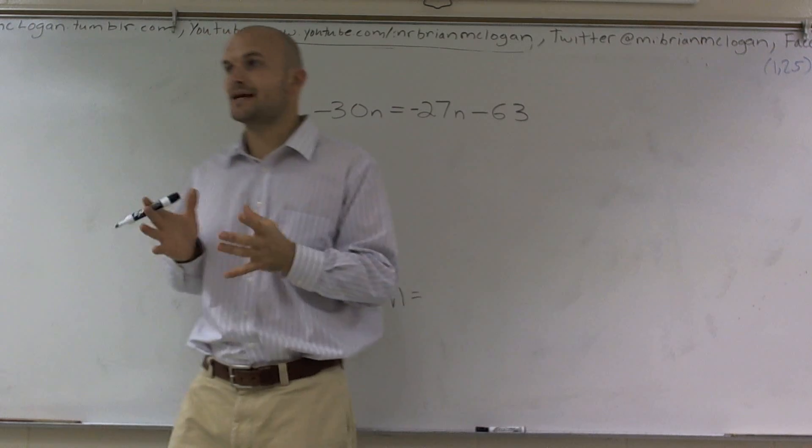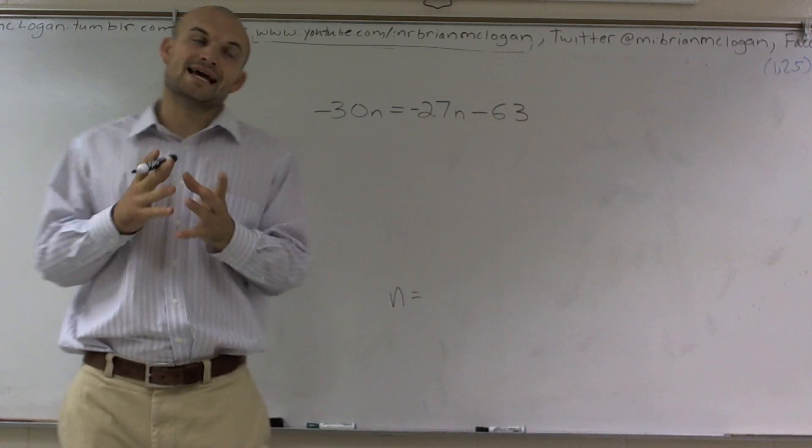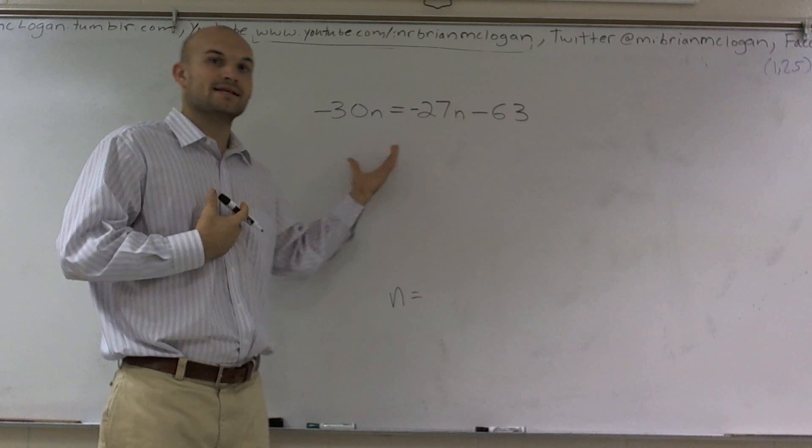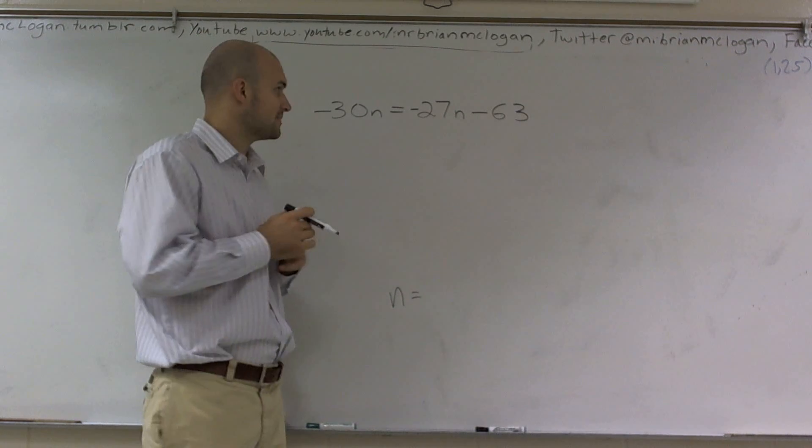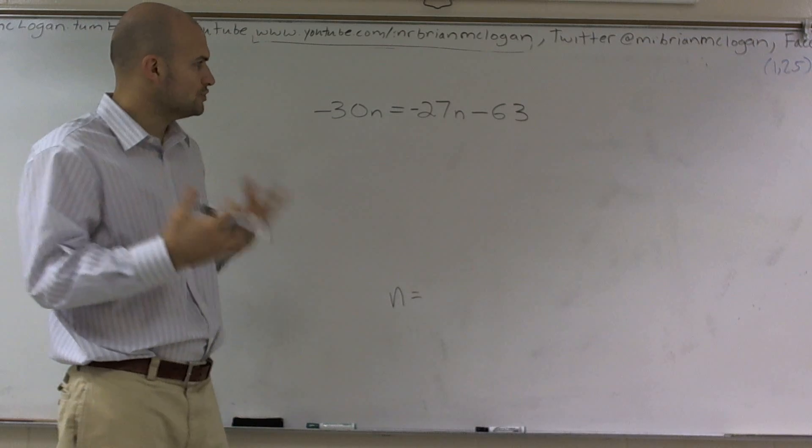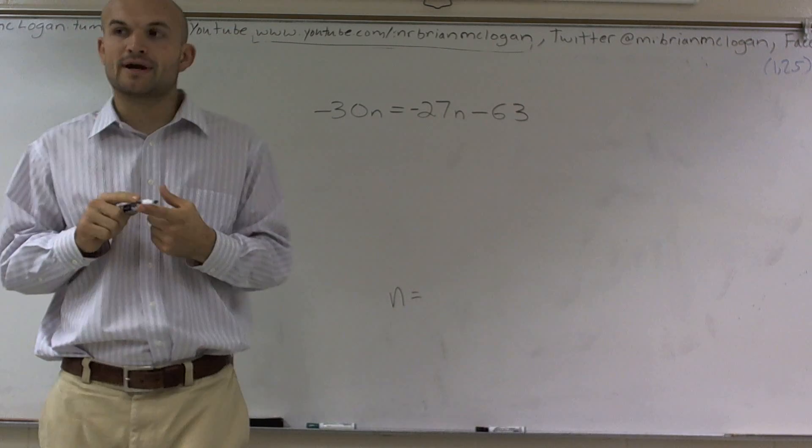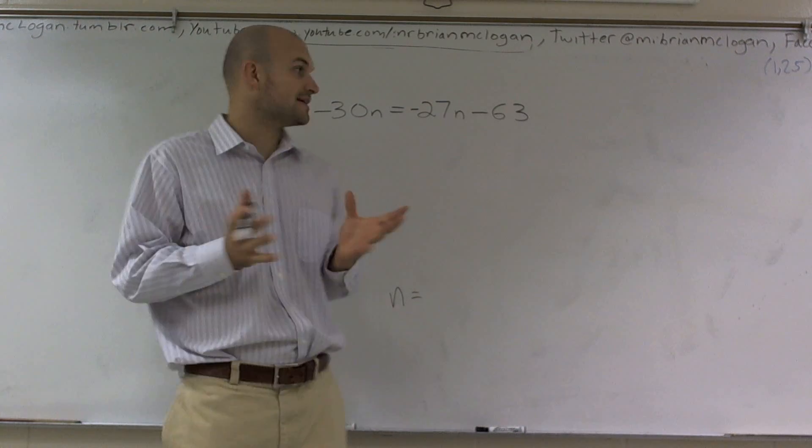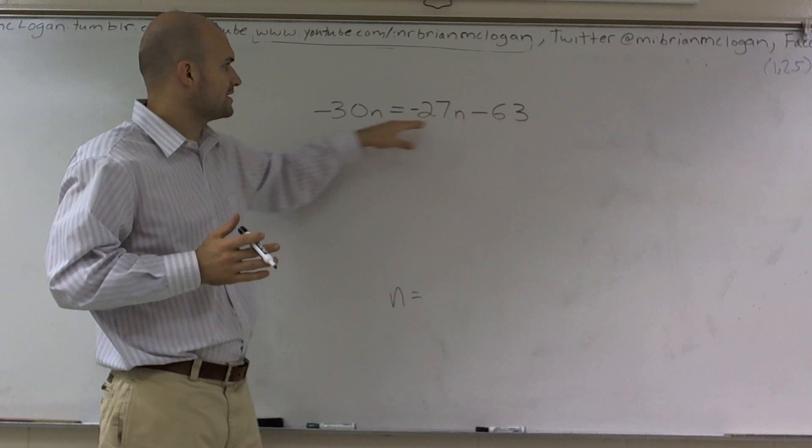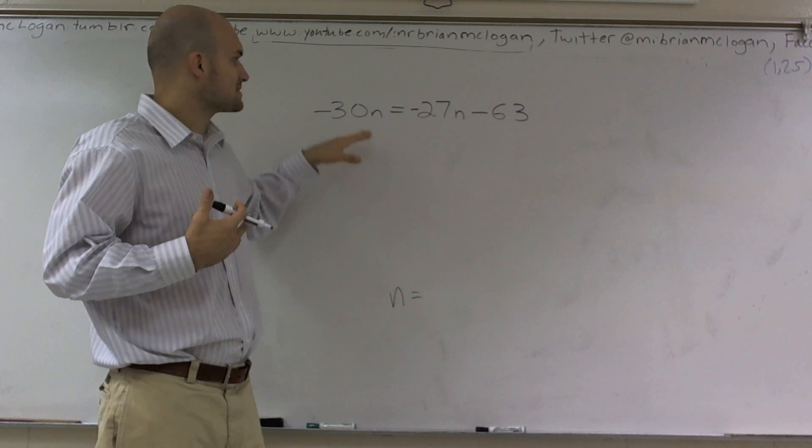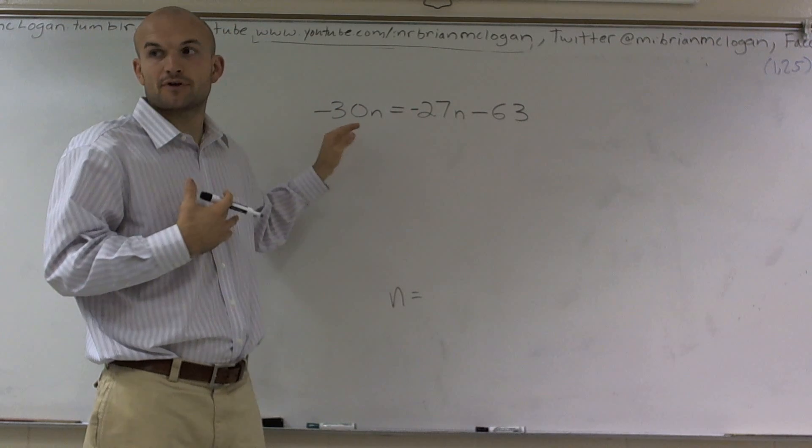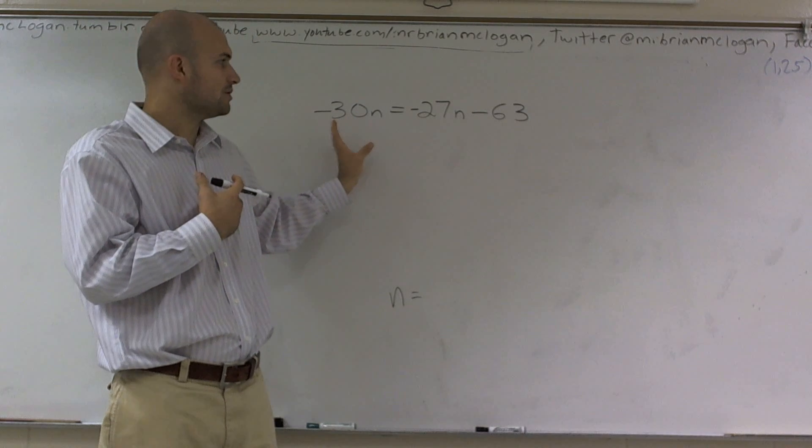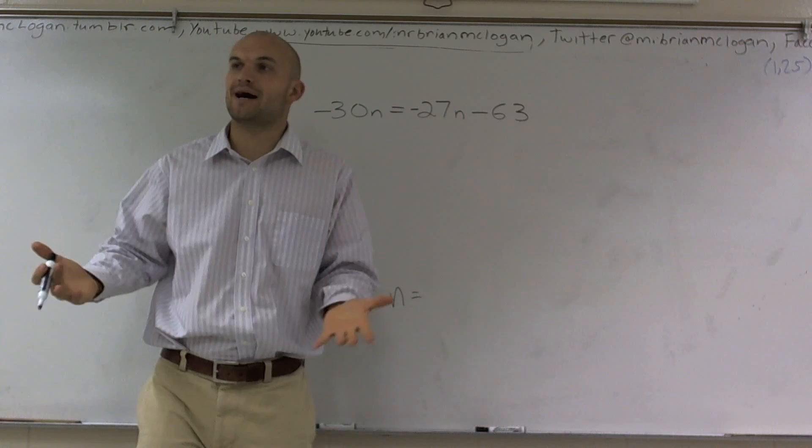What we need to do is figure out a way to combine these n's together. I can either solve for my n on the left or solve for my n on the right side. Usually it's helpful to get rid of the smaller of the n's. Here you have negative 30 and negative 27. It's helpful to move the smaller variable over because then you'll always get a positive answer.